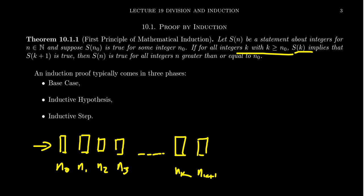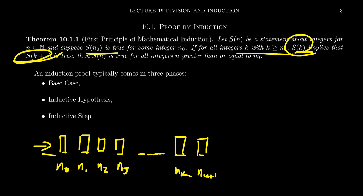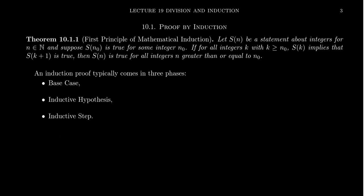The first statement — the base case — is that someone pushes the first domino. Then the second statement, commonly referred to as the inductive hypothesis, requires you to prove that if S(k) is true, then S(k+1) is also true — if this domino falls, the next one falls as well. Since this is an arbitrary case, it actually shows all of them falling over at once. Induction is very powerful because it proves an infinite number of statements about integers simultaneously.